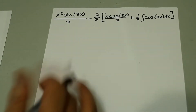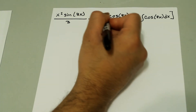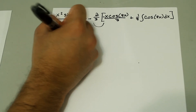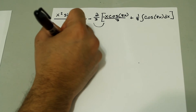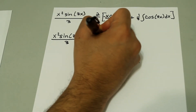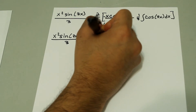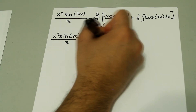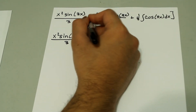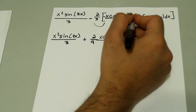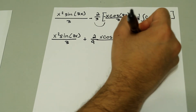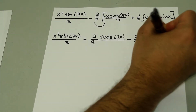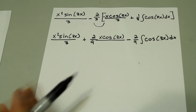So we distribute the minus 2/3 through the bracket. The negative times the negative gives a positive, so we have: x squared sine of 3x over 3, plus 2/9 times x cosine of 3x. Then the minus times the plus gives a minus, so minus 2/9 integral of cosine of 3x dx.